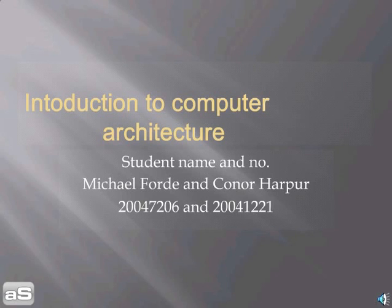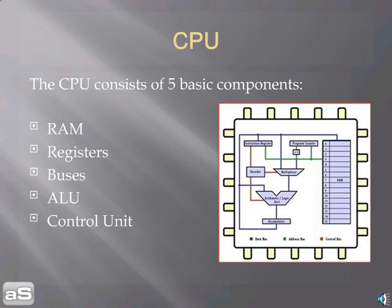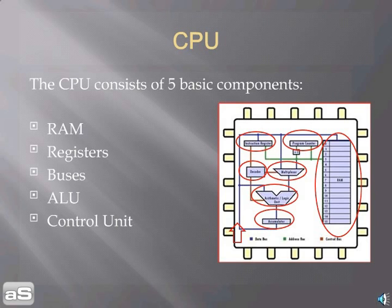Introduction to Computer Architecture by Michael Ford and Conor Harper. The CPU consists of five basic components: RAM, Registers, Buses, ALU, and Control Unit.